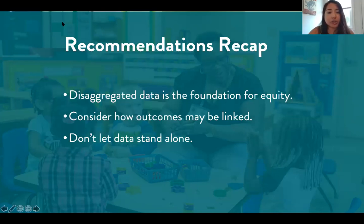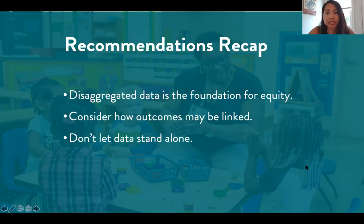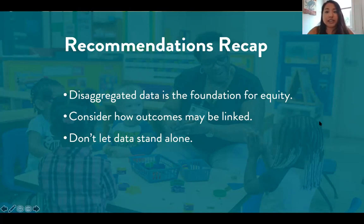Let's do a quick recommendations recap. Tip number one: disaggregated data is the foundation for equity — it helps us present an accurate picture of what's going on in our communities. Tip number two: consider how outcomes may be linked. Doing so helps us move from explaining the 'what' about the problem and instead telling the 'why' to move people to action. Tip number three: don't let data stand alone. Data is most effective at driving change when it can speak to both the head and the heart.